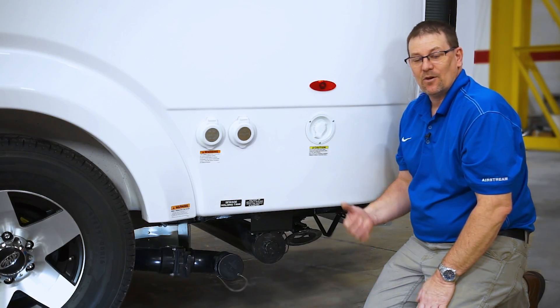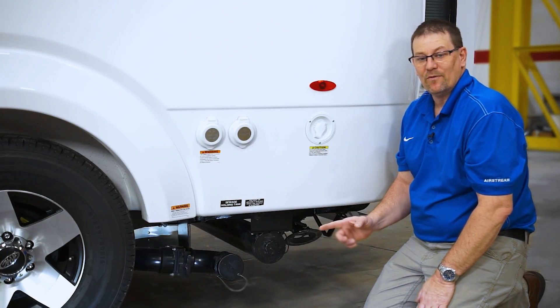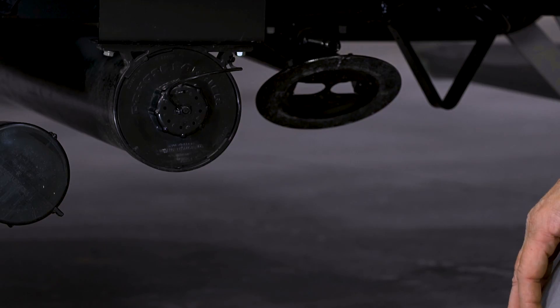The Nest has a dump tank. It has a gray and black tank combo, so there's only one valve. We have a compartment to store our sewer hose.